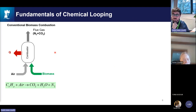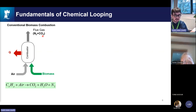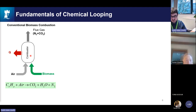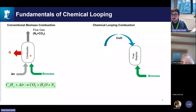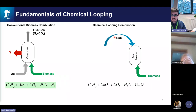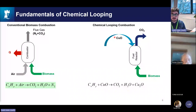So what does chemical looping offer? We have a fuel reactor like a combustor with biomass as fuel, but instead of air, we combust the fuel with metal oxides. The oxygen in the metal oxide combusts the fuel and produces pure CO2. Because we produce pure CO2, we don't need to capture it — it's already pure. We can simply compress and store it. The metal oxide loses its oxygen and becomes reduced.